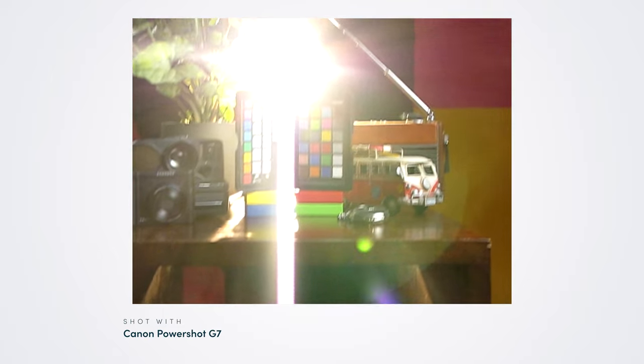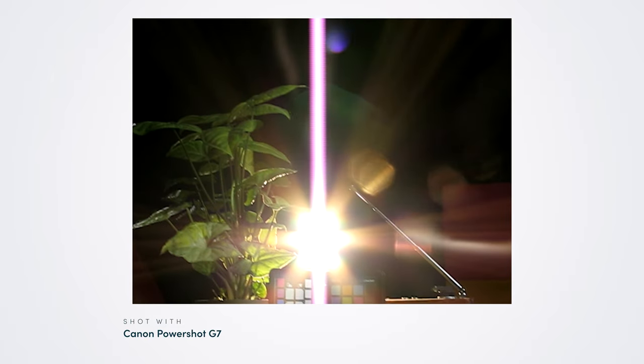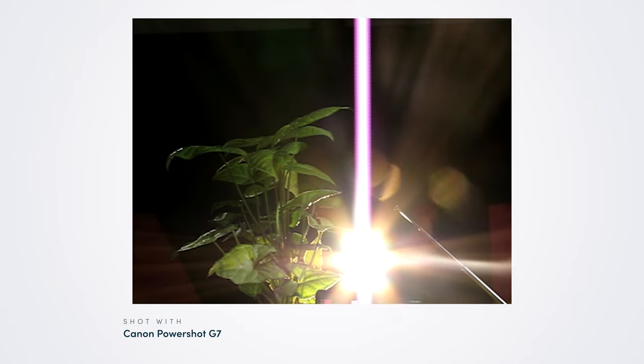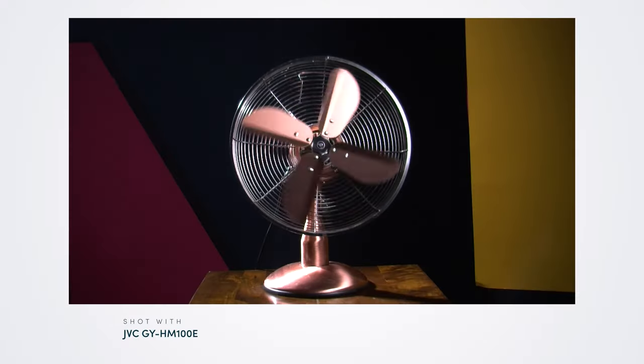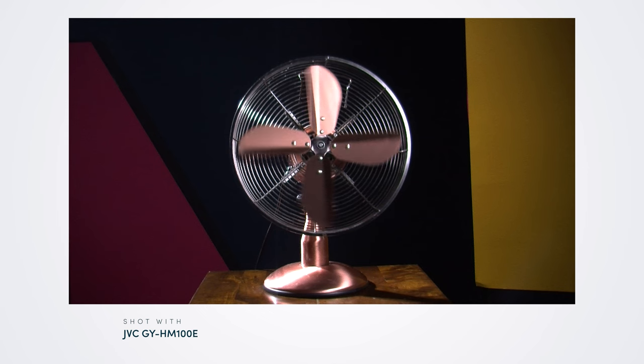CCD sensors are prone to vertical smearing and blooming of bright light sources. On the plus side, they often have a so-called global shutter, so there's no distortion when filming or photographing fast-moving objects. And they may or may not render more filmic images — more on that later.